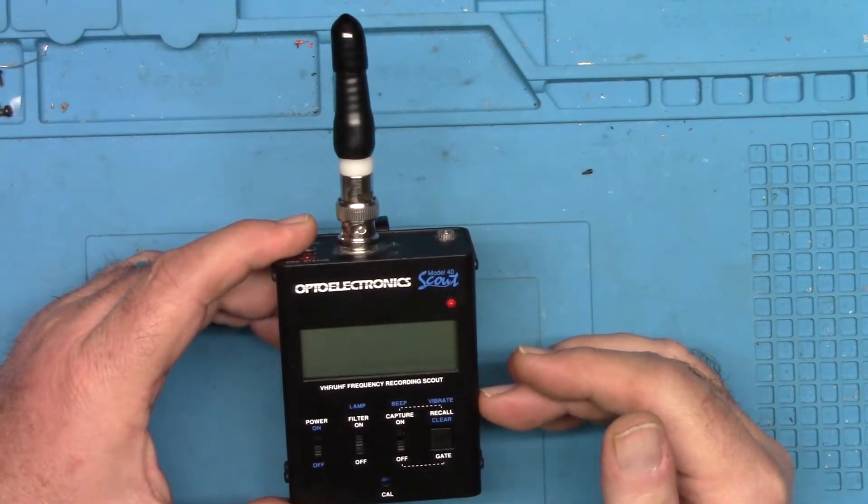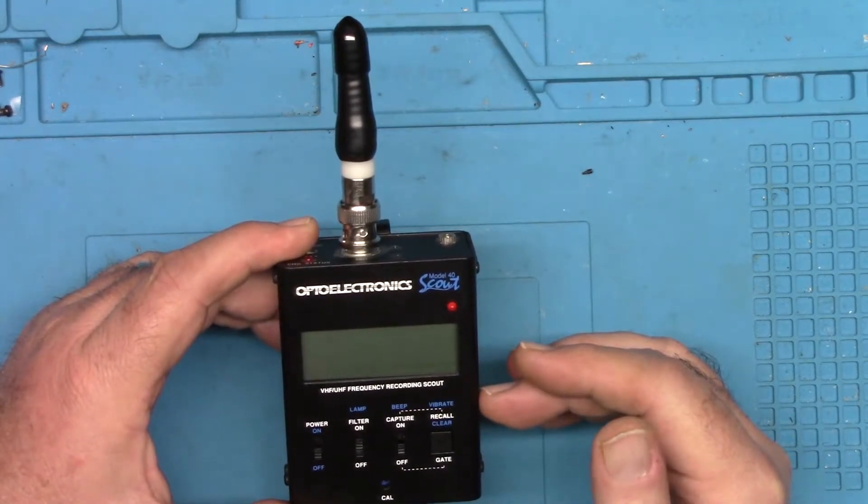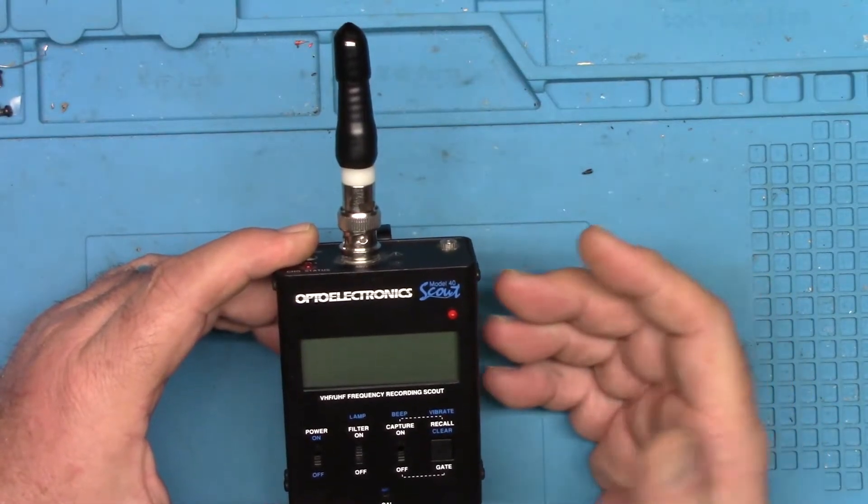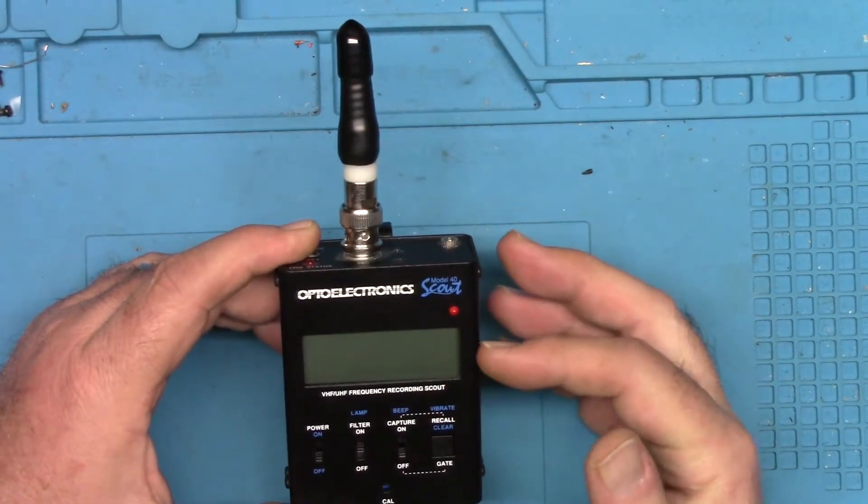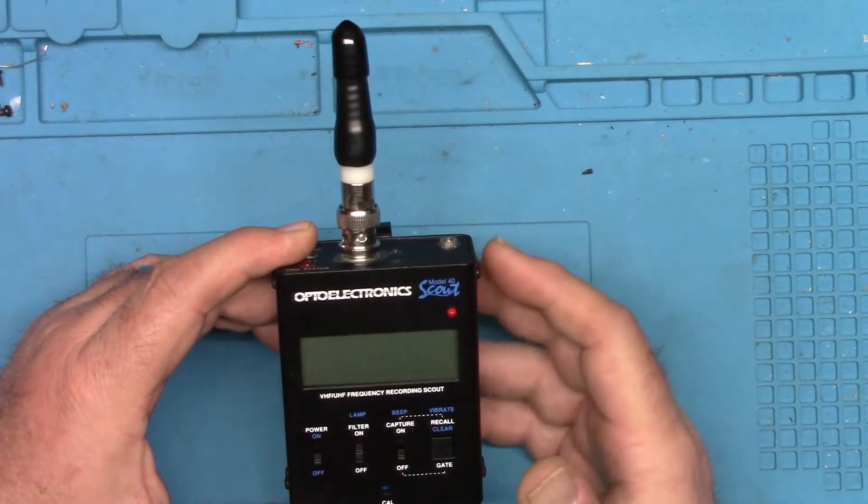It's got a microprocessor in it that it uses to detect that. So when it sees a frequency, it records it. You can use it in a recording mode or you can use it in an instantaneous read mode, either way.